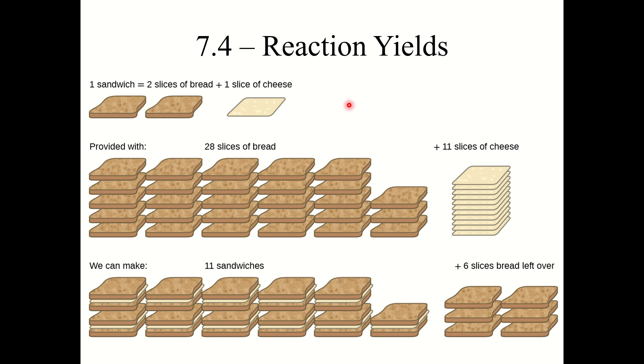Section 7.4 Reaction Yields. Here we're going to look at what happens when we have a limited quantity of our reactants and we're going to determine how much product we can make.